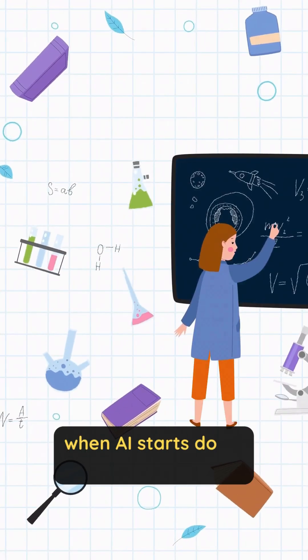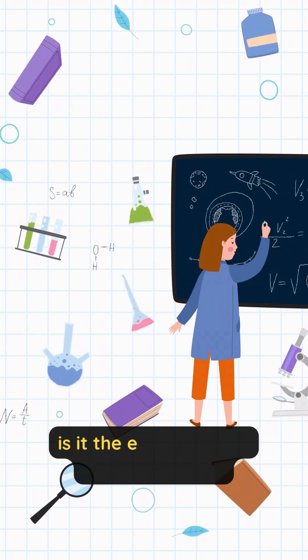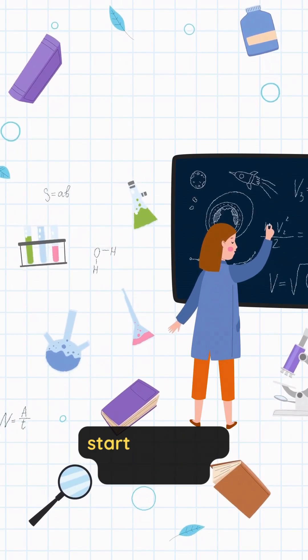So, when AI starts doing math better than us, is it the end of human limits or just the start of infinite discovery?